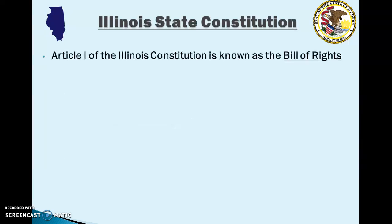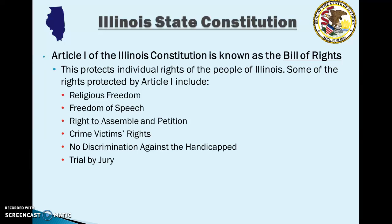Article 1 of the Illinois Constitution is known as the Bill of Rights — similar to the first 10 amendments of the federal Constitution. Article 1 protects the individual rights of the people of Illinois. Some of the rights protected include religious freedom, freedom of speech, the right to assemble and petition, crime victims' rights, no discrimination against the handicapped, no discrimination based on gender, and trial by jury. There are additional rights protected by Article 1 that you can find in the actual Illinois State Constitution.